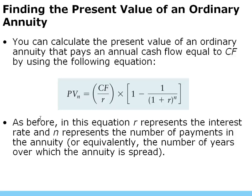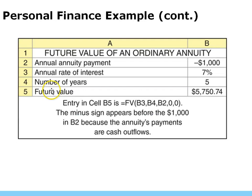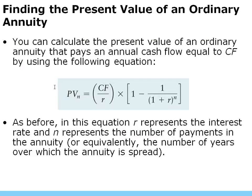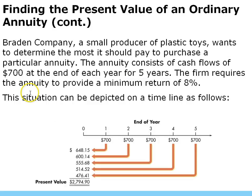Finding the present value of an ordinary annuity. To calculate it, we use this formula: PV = CF ÷ R × [1 − 1 ÷ (1 + R)^N]. This is the inverse of the future value annuity formula. The order of operations and the parentheses you have to put around these formulas in Excel can get pretty challenging, but it's doable. We're calculating the present value of a stream of future cash flows.